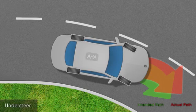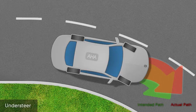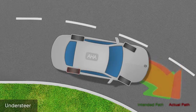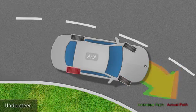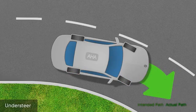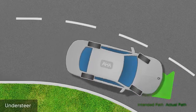Agile Handling Assist senses this understeer and works to correct it by applying brake pressure to individual wheels on the inside of the curve, bringing the vehicle back towards its intended path.